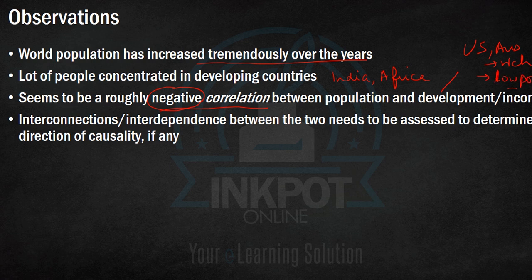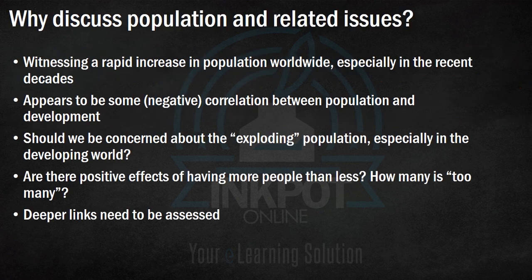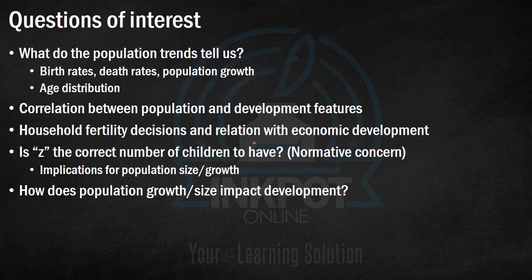This is an interesting pattern, and this chapter basically discusses the reasons behind it. These interconnections and interdependence between income and population are what we want to assess and understand properly. We are going to look at demographic trends and patterns of growth and development to answer four questions. The first question is: what insights about population size and growth can we get by observing demographic trends? For this purpose, we will look at variables such as birth rates, death rates, population growth, age distribution, and age patterns.